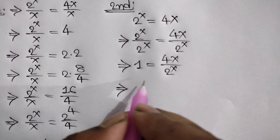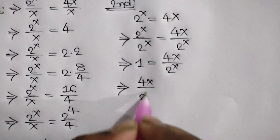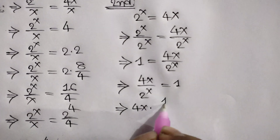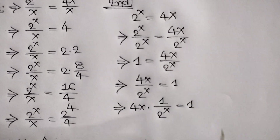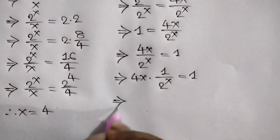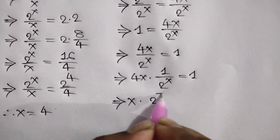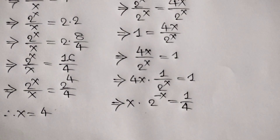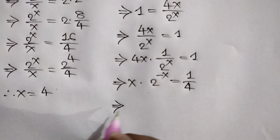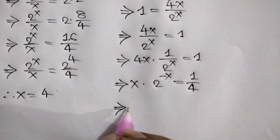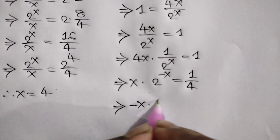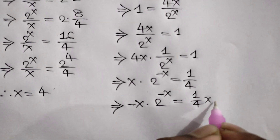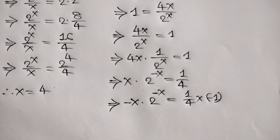Changing sides, we can write 4x over 2 to the power x is equal to 1. Or, 4x times 1 over 2 to the power x is equal to 1. Rearranging, x times 2 to the power negative x is equal to 1 over 4. Multiplying both sides by negative 1, we get negative x times 2 to the power negative x is equal to negative 1 over 4.